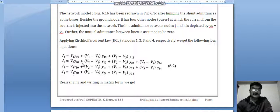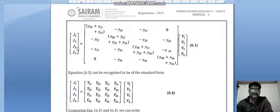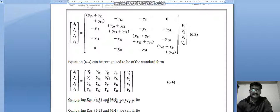Similarly, we will get J3 and J4. Rearranging and writing in matrix form, we get like this: J1 here and Y10 plus Y1 like that and voltage in this side.